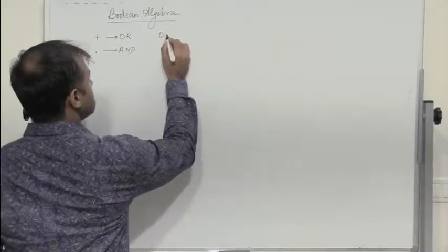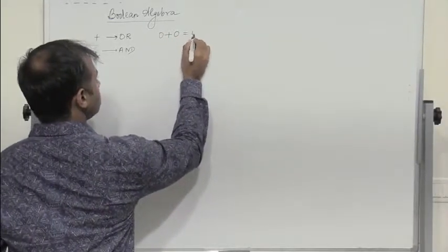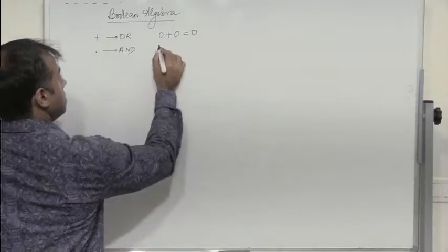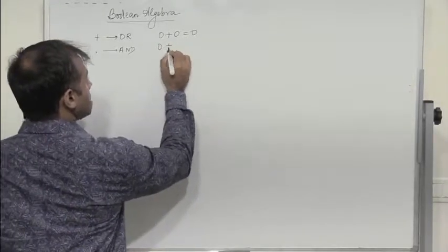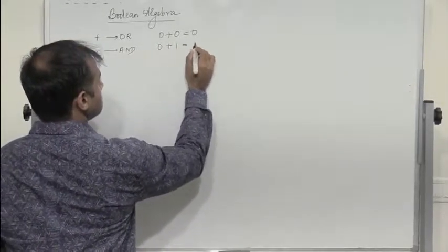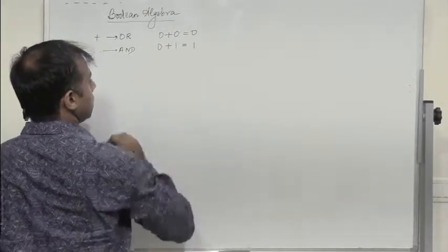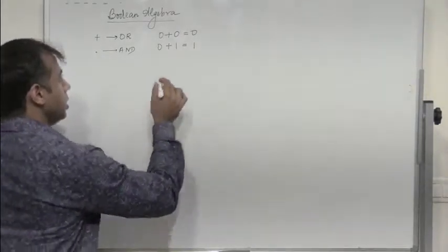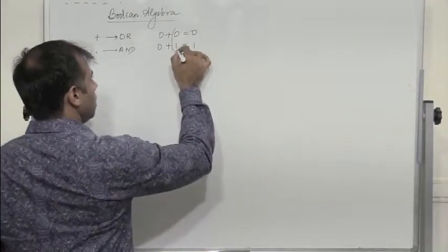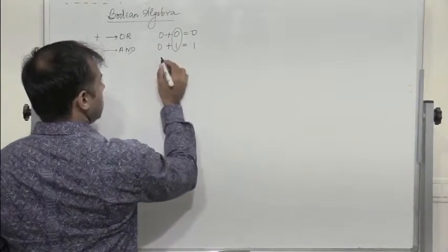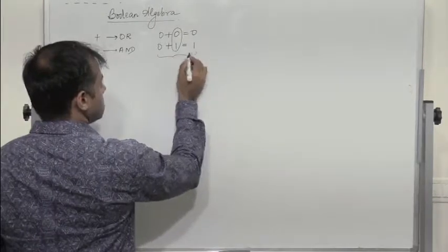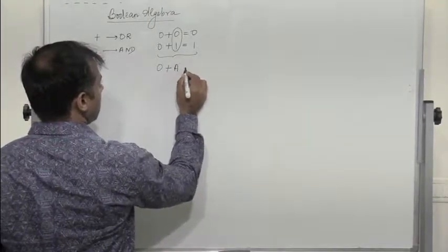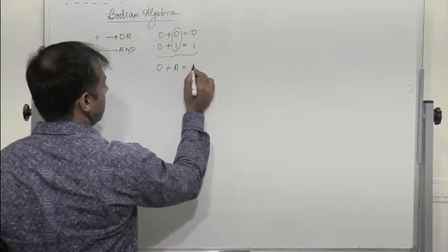Now, 0 plus 0 is 0. 0 plus 1 is 1. We can simplify this as: 0 plus A is A itself.